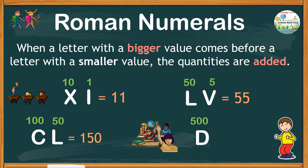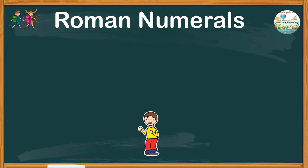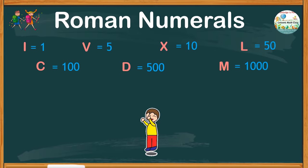We write D for 500. If written before C, which is 100, we add the values to 600. Let's apply what we've learned by using multiple letters. But before we do so, be reminded that when a letter with a bigger value comes before a letter with a smaller value, the quantities are added.